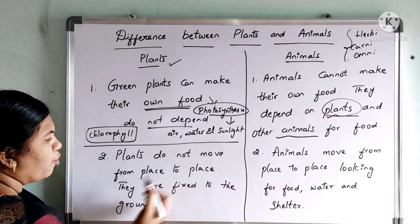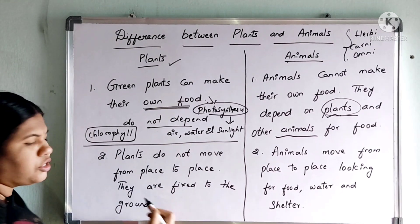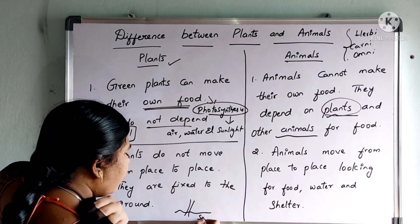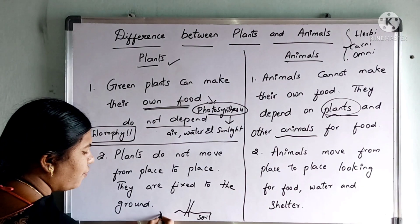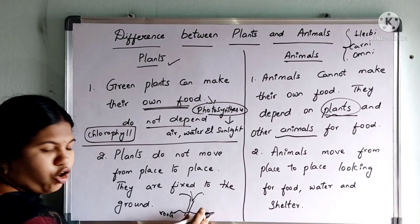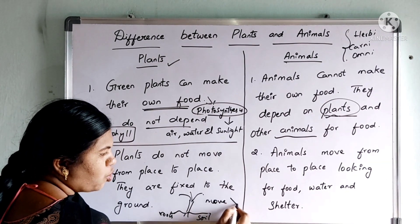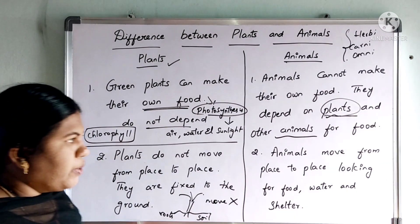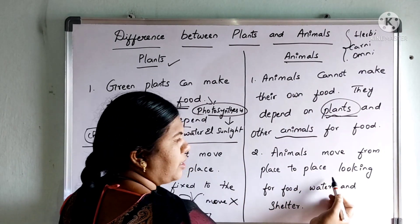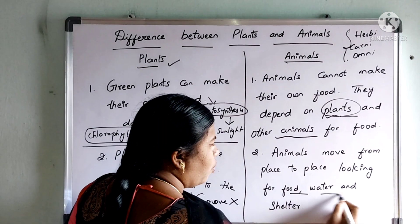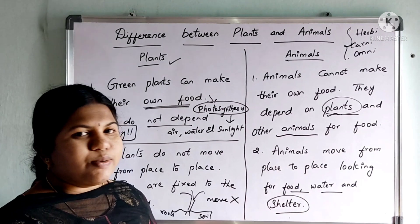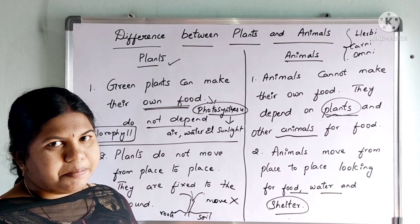Coming to the second point — plants do not move from place to place. They are fixed to the ground. The roots are fixed in the soil, that is why they cannot move from one place to another. Movement is not there in plants. Whereas, when you take animals, animals can move from one place to another because they require food, water and shelter. For this purpose, animals will be moving or wandering from one place to another.